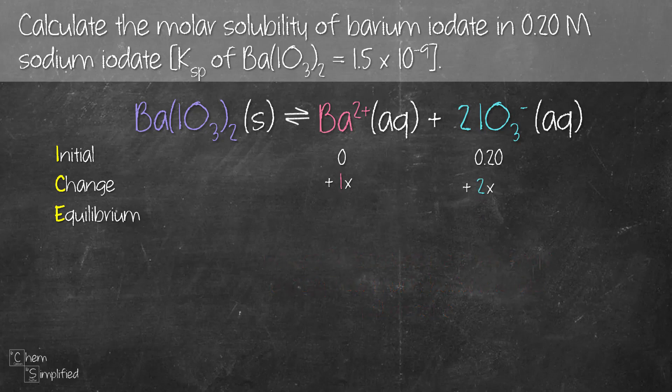For every 1 mole of barium iodate, we get 1 mole of barium ion — that's why we add 1x. But for every 1 mole of barium iodate, we get 2 moles of iodate ion, and that's why we add 2x. The number of x we're adding depends on the coefficient in front of those terms. As for the equilibrium row, it's initial plus change: for barium ion it's x, and for iodate ion it's 0.20 plus 2x.